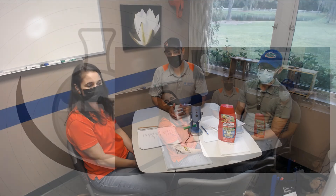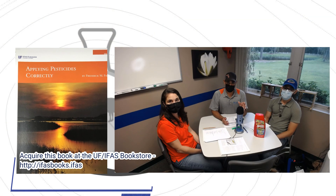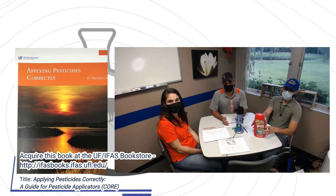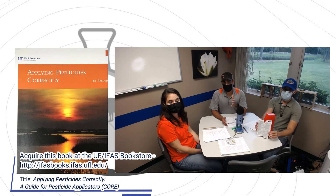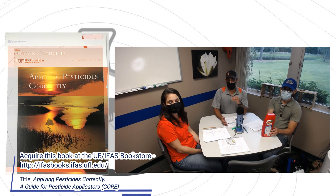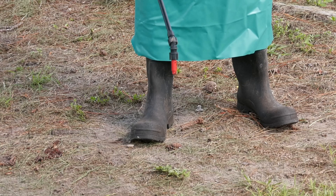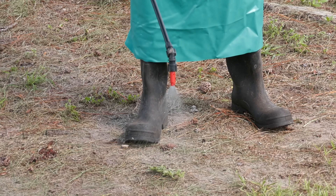You can contact your local extension agent and they can guide you through all of these. If you lose your label for your pesticide, we can also go online and find it for you. Remember, the label is the law. Read the label and find out what the requirements are before you start applying a pesticide. If you want further information, contact your local extension agent — we are here to help. This is The Right Dose. Thank you for watching.